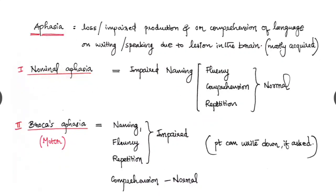The first one is the nominal aphasia. Second one is the Broca's aphasia. Third one is Wernicke's aphasia. And fourth one the mixed aphasia or global aphasia. Nominal aphasia, it is impaired naming where the fluency, comprehension and repetitions are normal.